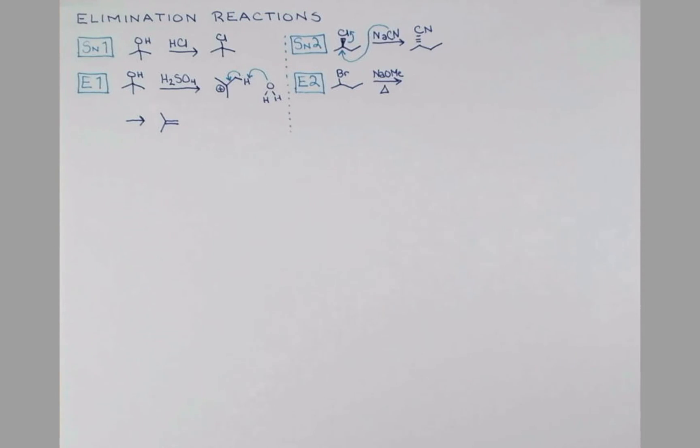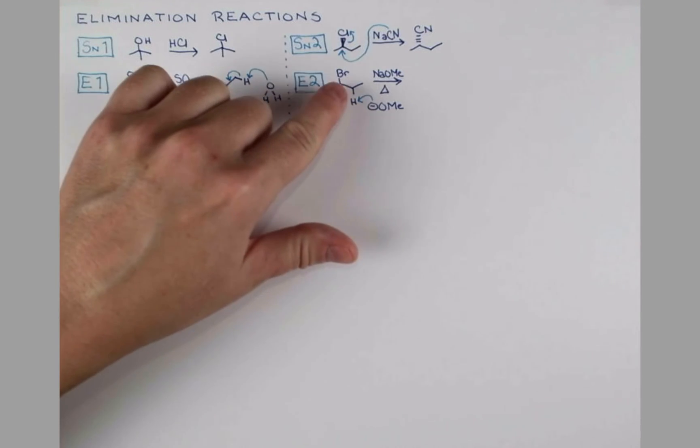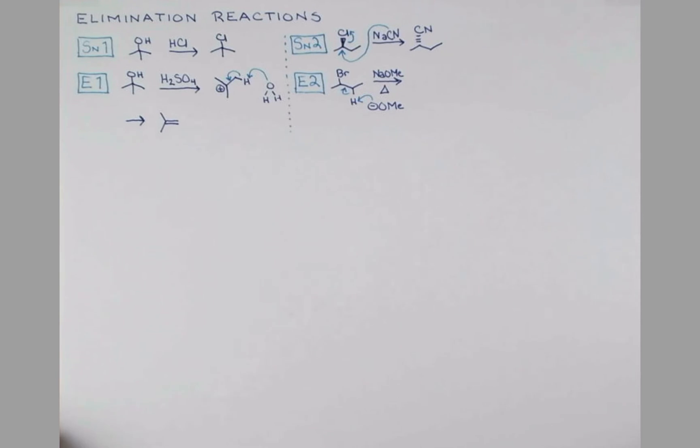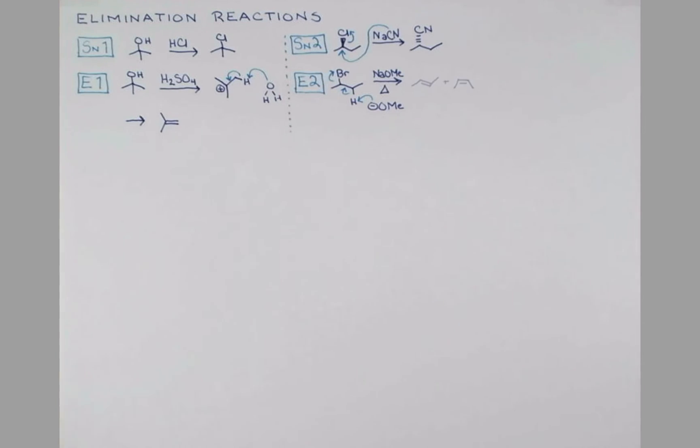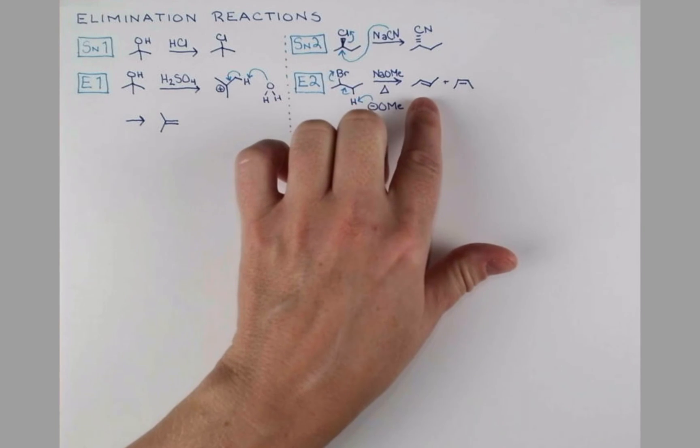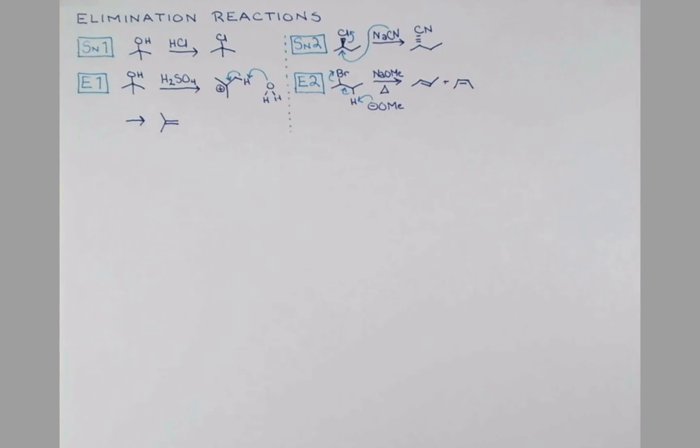Under these strong base conditions, instead of substituting the bromine with the OME, the OME is instead going to attack a proton on the carbon next door. Just like the SN2 mechanism, E2 takes place in one step. The methoxide attacks the proton, these electrons push in to form our alkene, and bromine is eliminated.